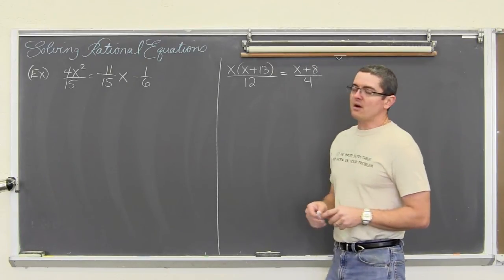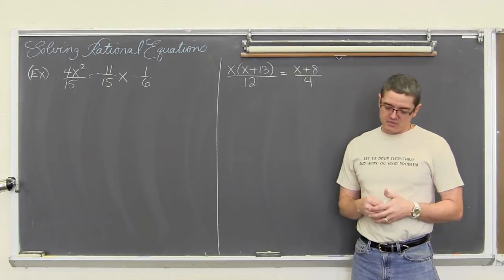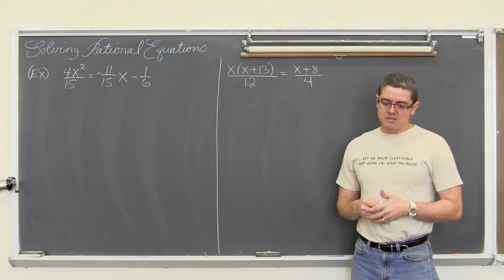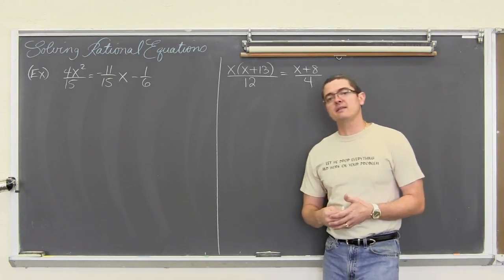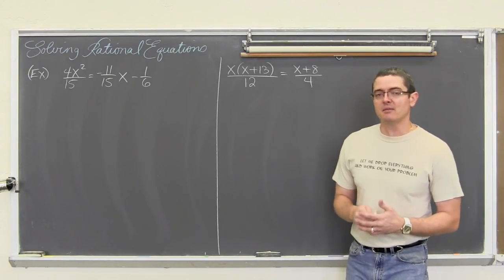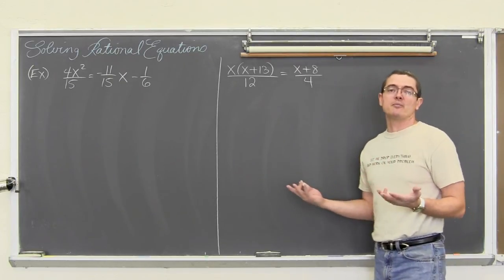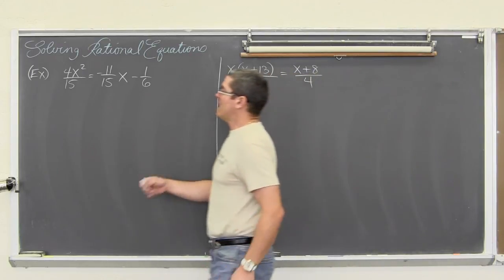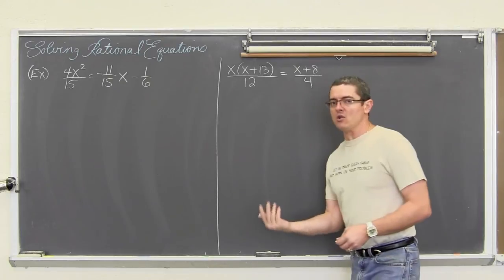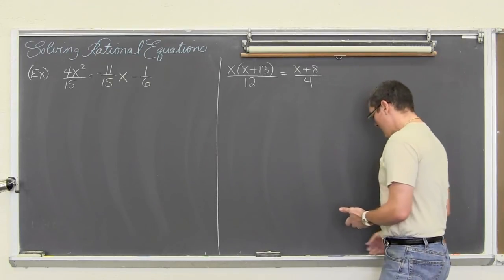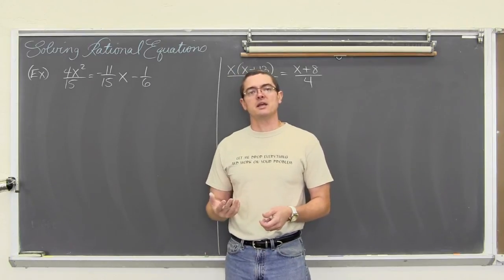What we are going to do with our rational equations or inequalities — because one of these examples is going to be an inequality — is simply try to get rid of the fractions as fast as possible. That means multiplying by the LCM, lowest common multiple, to get rid of the fractions as quickly as possible to simplify the problems. We have a denominator here of 15, 15, and 6. We can multiply both sides of the equation by something that will cancel out those denominators — the LCM.